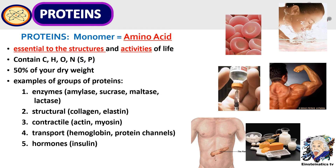...nitrogen, sulfur, and phosphorus. Proteins make up 50% of your dry weight. Examples of groups of proteins include enzymes, structural proteins, contractile proteins, transport proteins, and hormones.